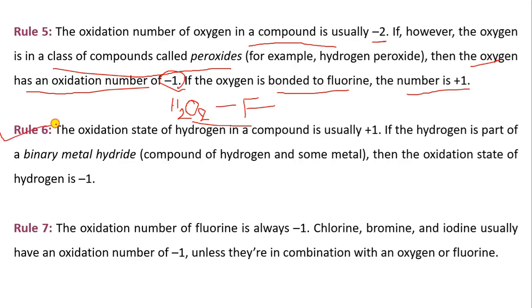Now rule 6. The oxidation state of hydrogen in a compound is usually plus 1. If the hydrogen is a part of binary metal hydride, for example, the compound of hydrogen and some metal like H2SO4, then the oxidation state of hydrogen is minus 1.